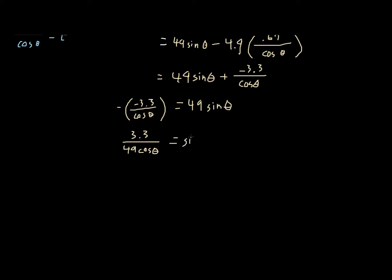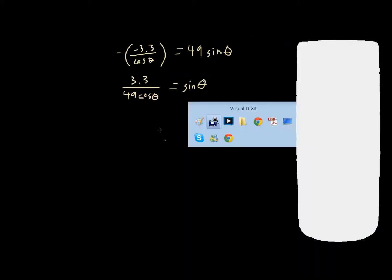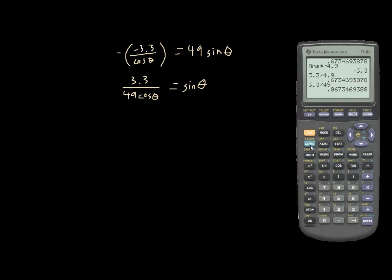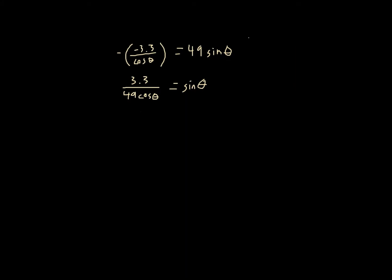Let's simplify this. 3.3 divided by 49 — I'm going to store this long decimal — gives 0.067. So 0.067 over cosine theta is equal to sine theta.